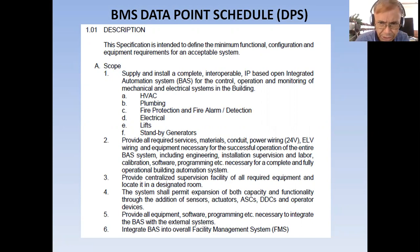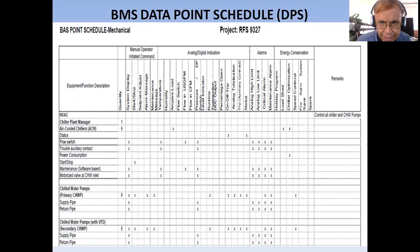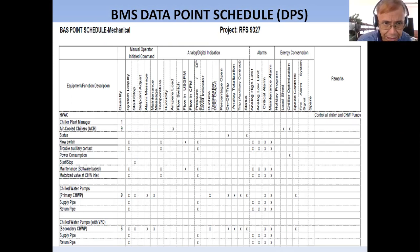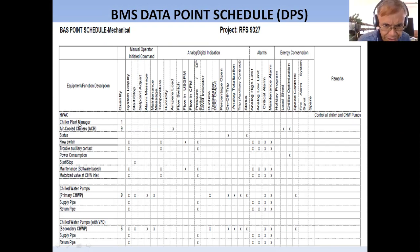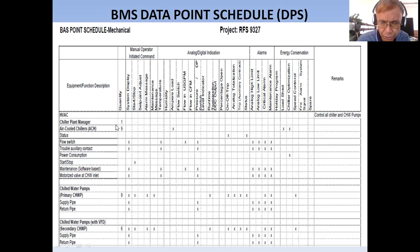Let's go directly to the defined BMS DPS in the specification. The first item under mechanical is HVAC — Heating, Ventilating, and Air Conditioning. They need a chiller plant manager, quantity one, which will control nine units of air-cooled chillers. The data points listed include status, flow switch, trouble auxiliary contact, power consumption, start/stop, maintenance, software-based motorized valve, and more.